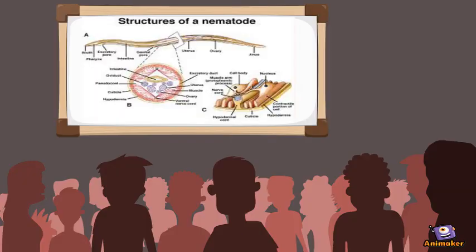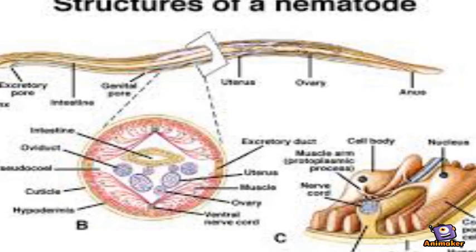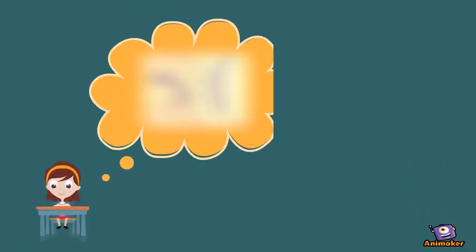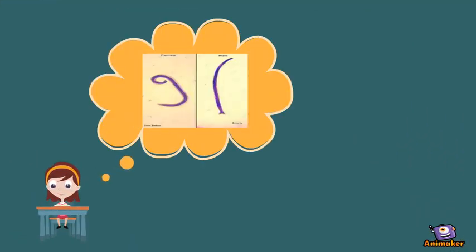It also has subcuticular epithelium, which is responsible for the secretion of cuticles, and the somatic musculature, which has two types: the platymyrian muscle cell and the coelomyrian muscle cell.